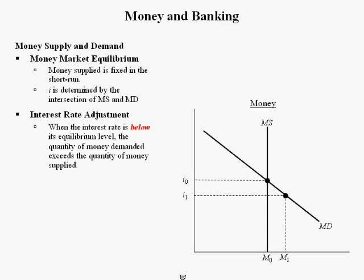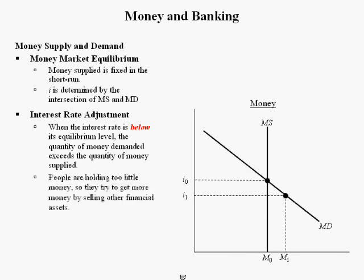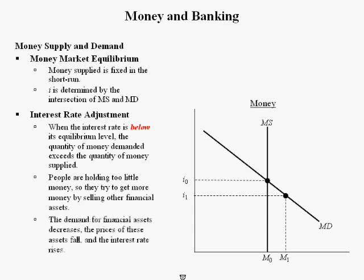When the interest rate is below its equilibrium level, the quantity of money demanded (M₁) exceeds the quantity of money supplied (M₀). People are holding too little money, so they try to get more by selling other financial assets like CDs and bonds. Demand for financial assets decreases, prices of these assets fall, and the interest rate rises.